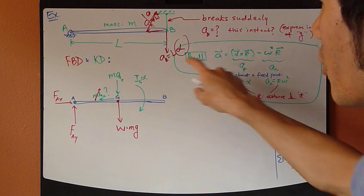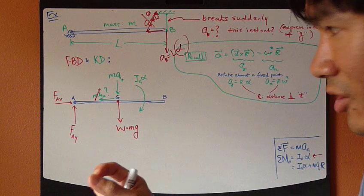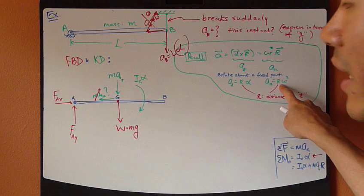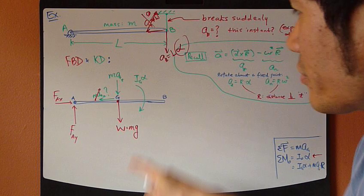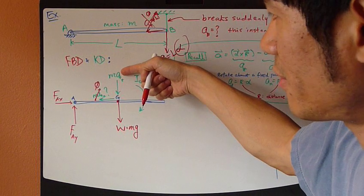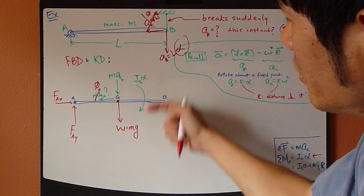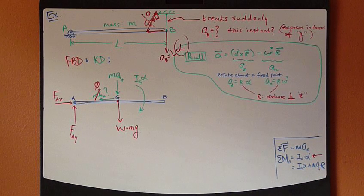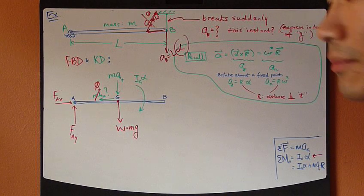But, we just concluded that the normal component of acceleration is zero at this instance because it equals r omega squared. And omega is zero at this instance. So, only tangent component survives. So, you have this rotational angular acceleration term and then the linear acceleration term. That's all. So, for now, our free body diagram and kinetic diagram are complete.